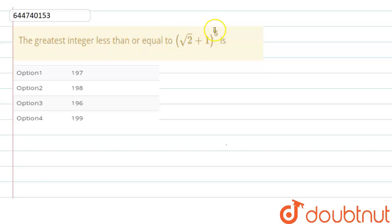So what we have to do is find the greatest integer which is less than or equal to (√2 + 1)^6. So first let us expand our given bracket, that is (√2 + 1)^6.